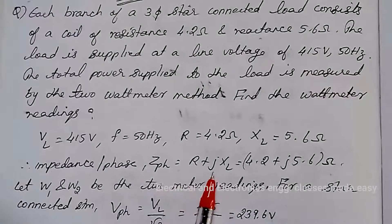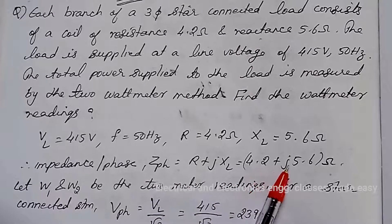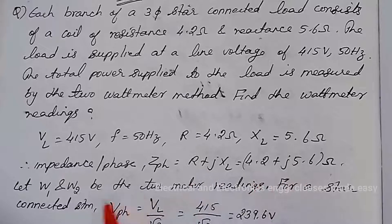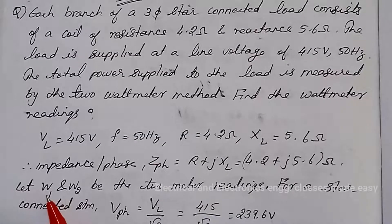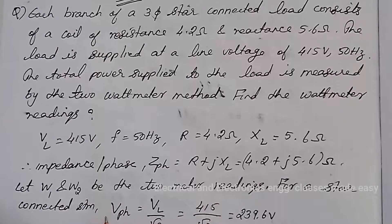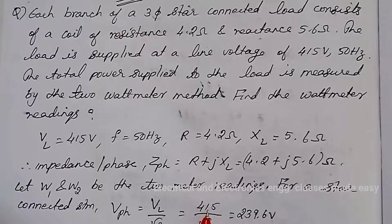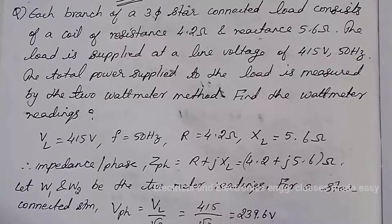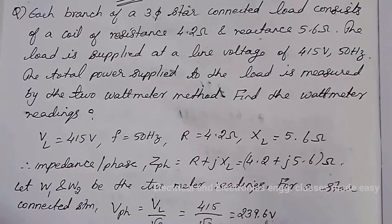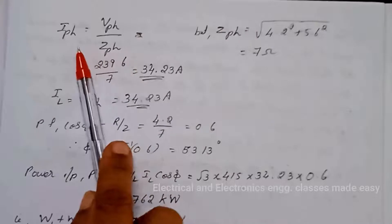Let W1 and W2 be the 2 watt meter readings. The impedance per phase is Z = R + jXL = 4.2 + j5.6 ohm. For a star-connected system, V_phase = VL / √3 = 415 / √3 = 239.6 volt.